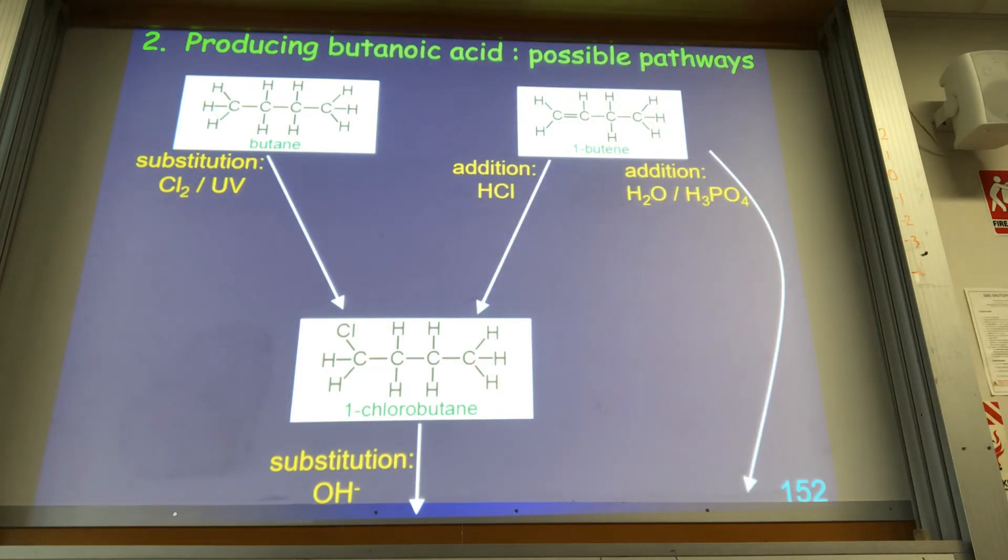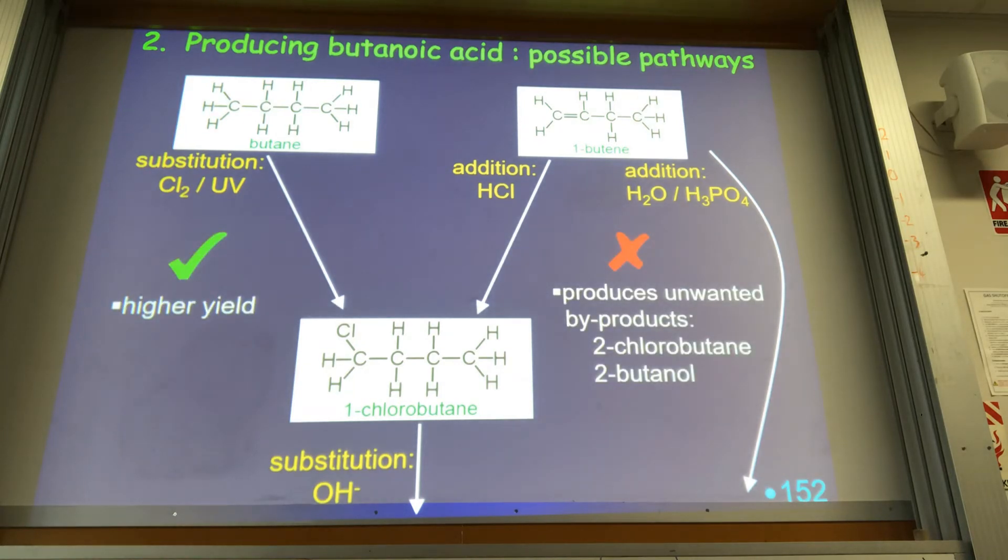We can produce chlorobutane via addition with HCl to butanol, or we can directly add steam with a phosphoric acid catalyst, 300 degrees, to 1-butene and we'll directly get butanol.